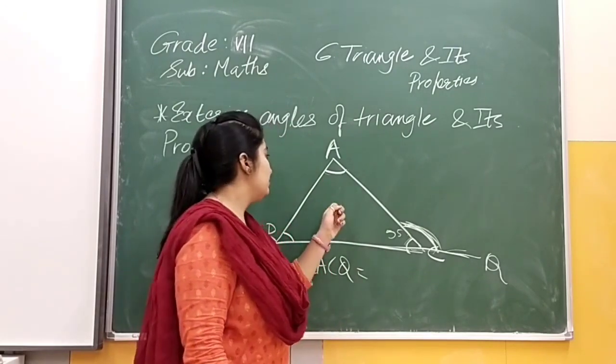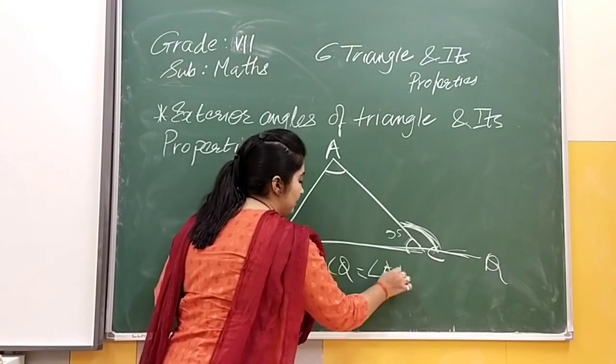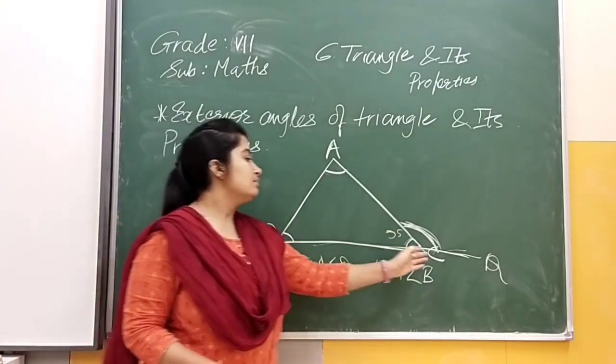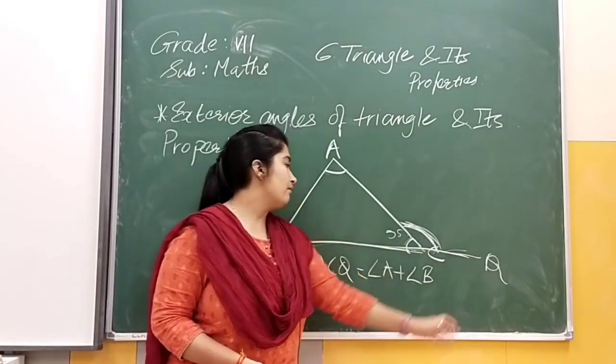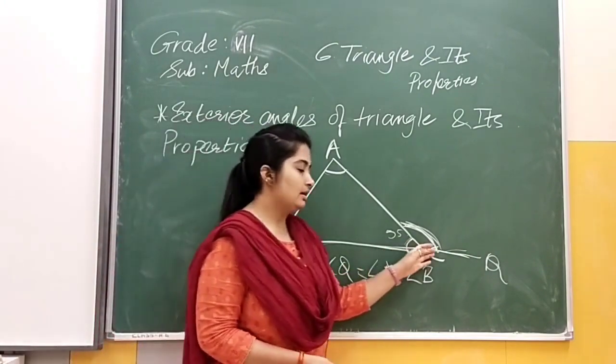Which angles are on our opposite side? Those are angle A and angle B. Angle A is here and here we have angle B. So it will be equal to them. Angle ACB will be - ACQ will be equal to angle A and angle B.